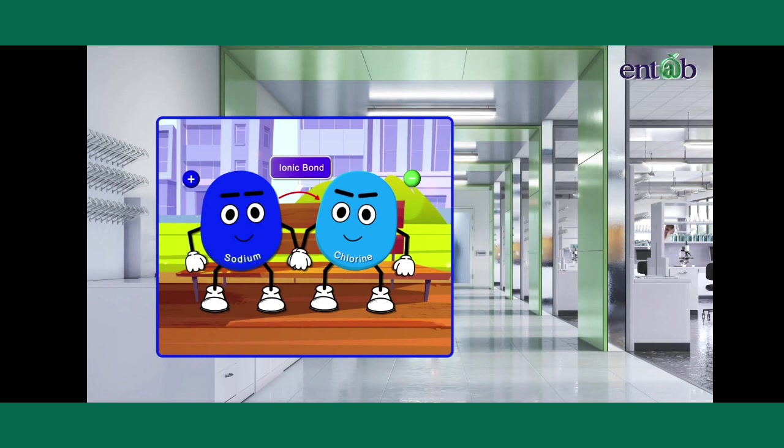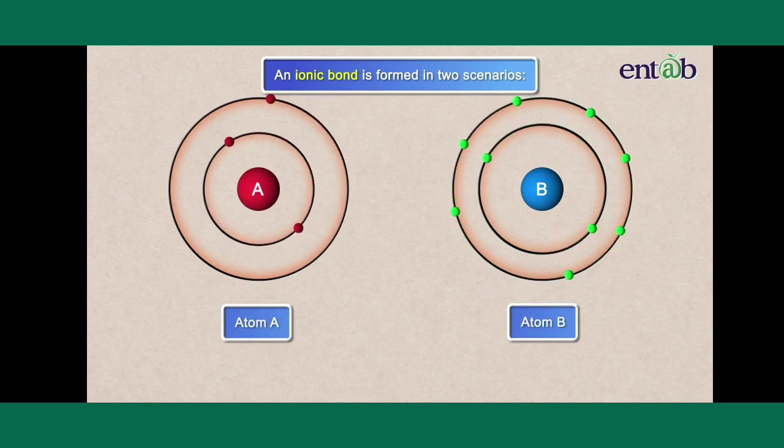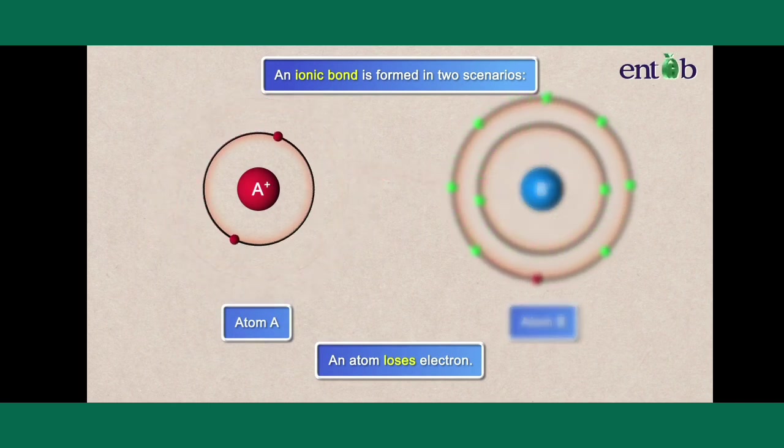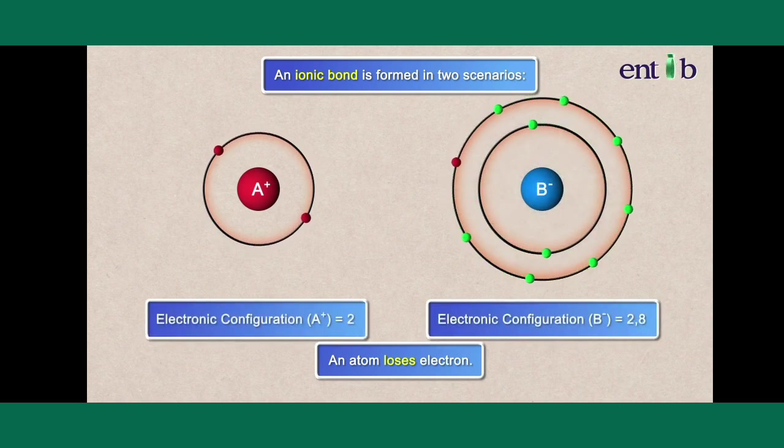This was an interesting story about the formation of an ionic bond between sodium and chlorine. The ionic bond is also known as an electrovalent bond. An ionic bond is formed in two scenarios. When one of the atoms donates electrons and forms a positive ion to achieve the electronic configuration of inert gases and for the completion of the octet, thus resulting in its stability.